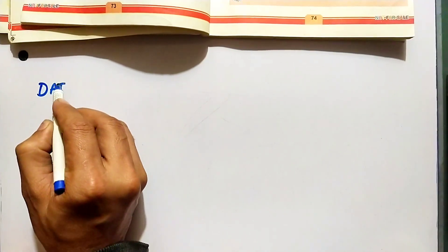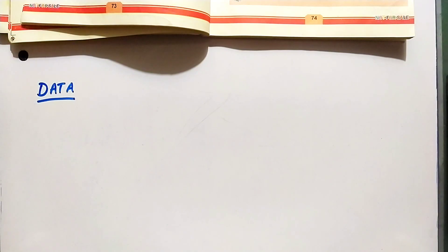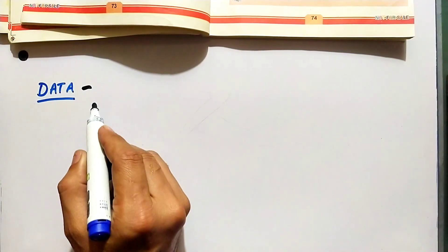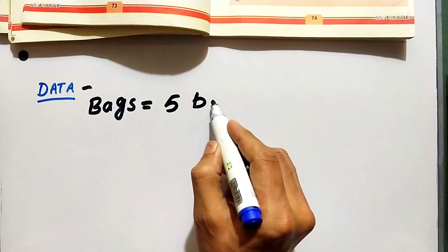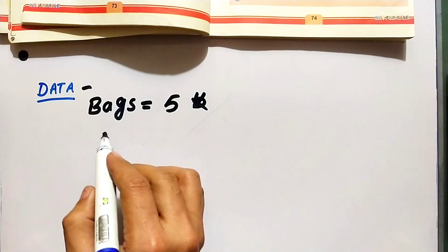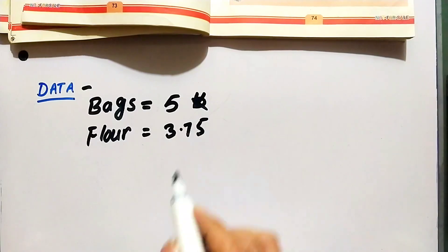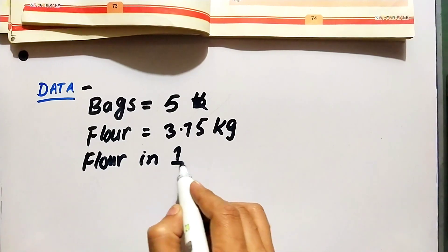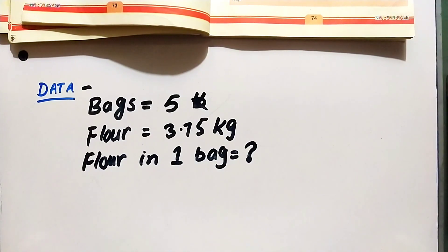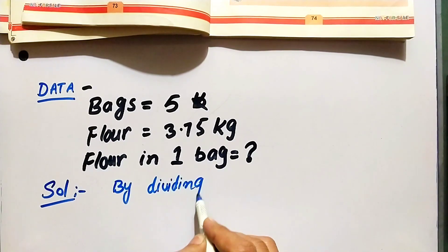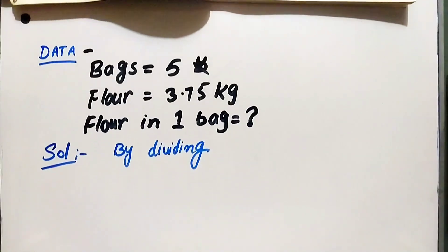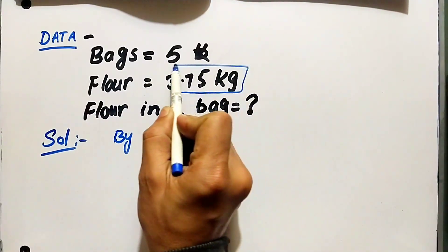In the 5th class, it is easy to use. It is clear. The solution is to be found by dividing. In the data, the number of bags is given, and the solution is by dividing.